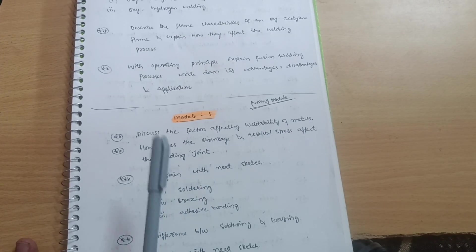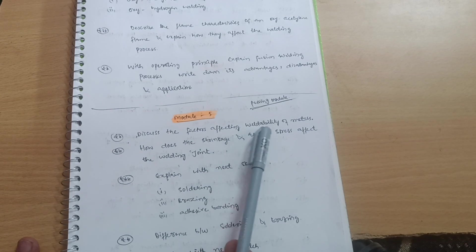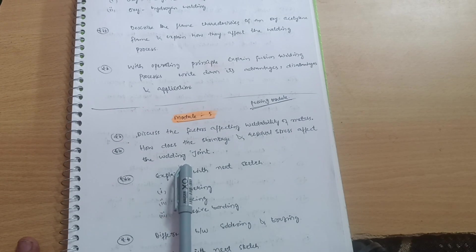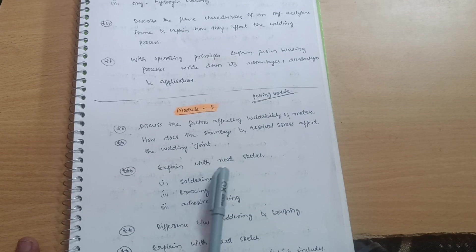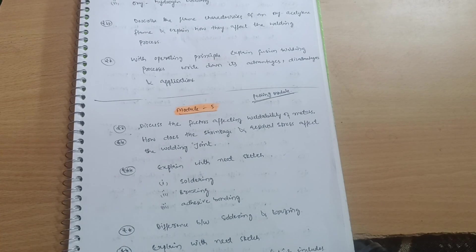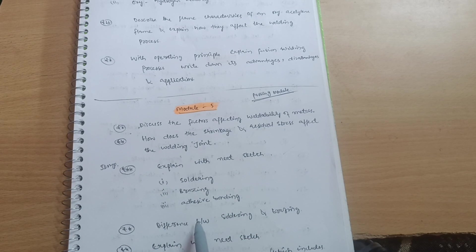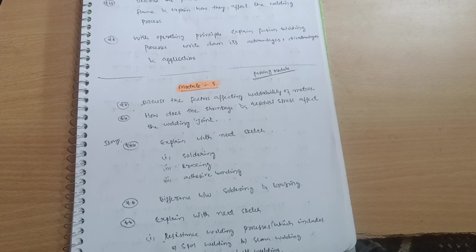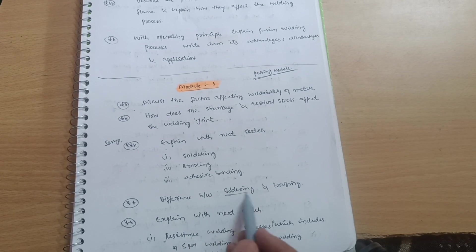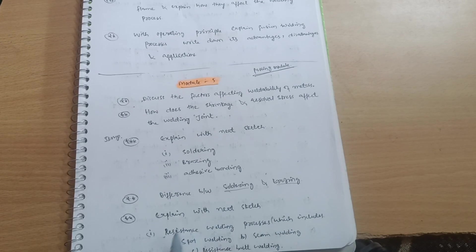Next passing module is Module 5. Discuss the factors affecting weldability of metals. How does the shrinkage and residual stress affect the welding joint? This may be the question. Explain with neat sketch, this is very important, super important I can say, this is soldering, brazing, and adhesive bonding. Next is difference between soldering and brazing, this may be the question.